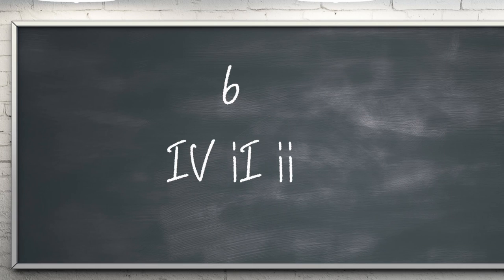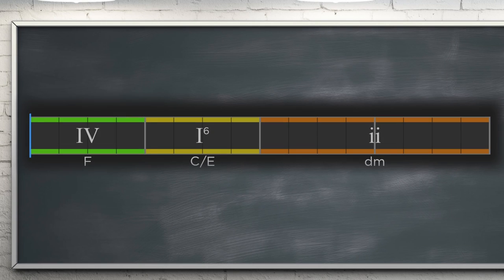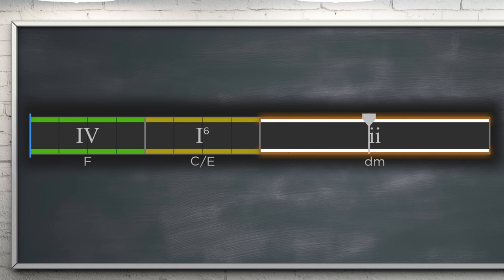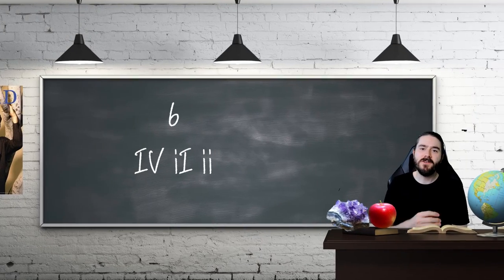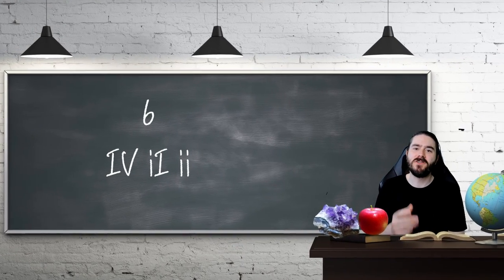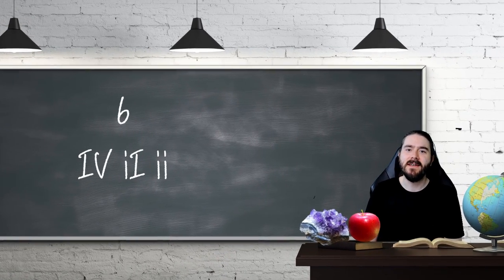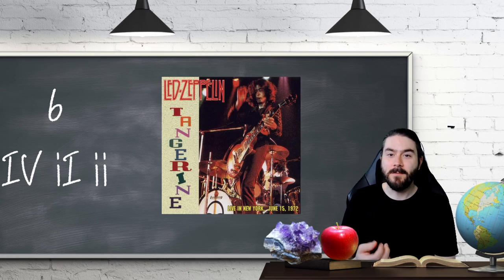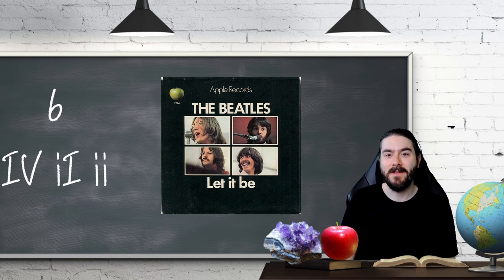At number 6 it's 4, 1st inversion 1, 2. Another use of the first inversion 1 chord here, acting as a step down to the 2 chord. Examples of this include Tangerine by Led Zeppelin and Let It Be by The Beatles.